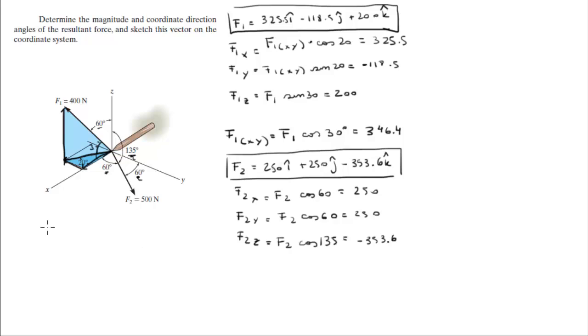Now to find the resultant force you just add them, which means you add the X with the X, the Y with the Y, the Z with the Z, and it gives you a value of 575.5i plus 131.5j minus 153.6k.